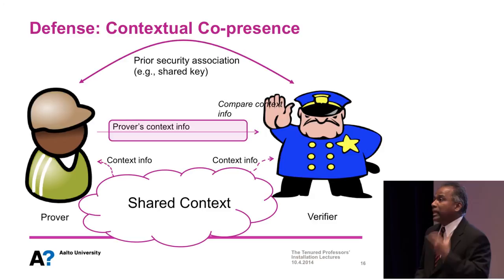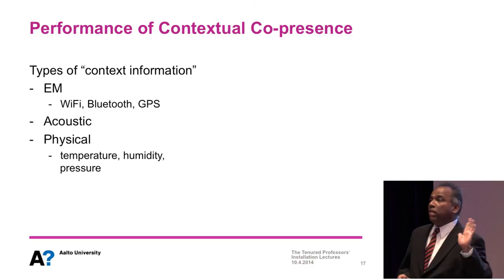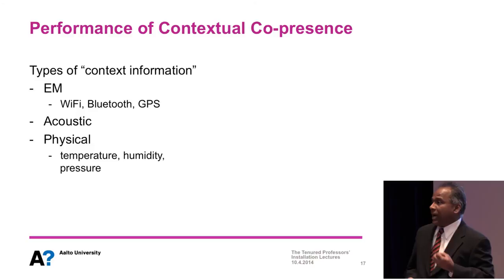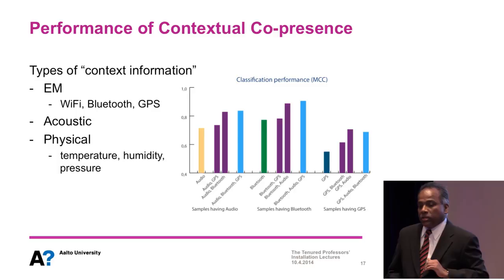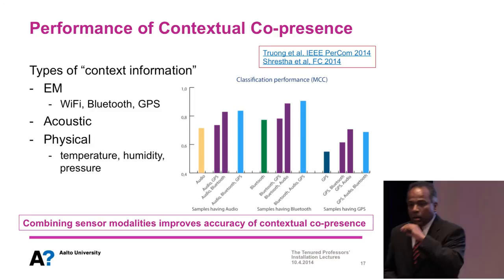If they see the same environment, the prover can encapsulate that environment in some digital form and send it via a secure channel to the verifier, which can then compare whether they match. To encapsulate the environment, we can use commonly available sensors to capture electromagnetic information — like nearby WiFi and Bluetooth devices — or acoustic information like ambient audio, or even physical factors like temperature, humidity, and pressure. In our experiments, we found that combining multiple modalities generally improves security robustness even when single modalities are not very robust on their own.